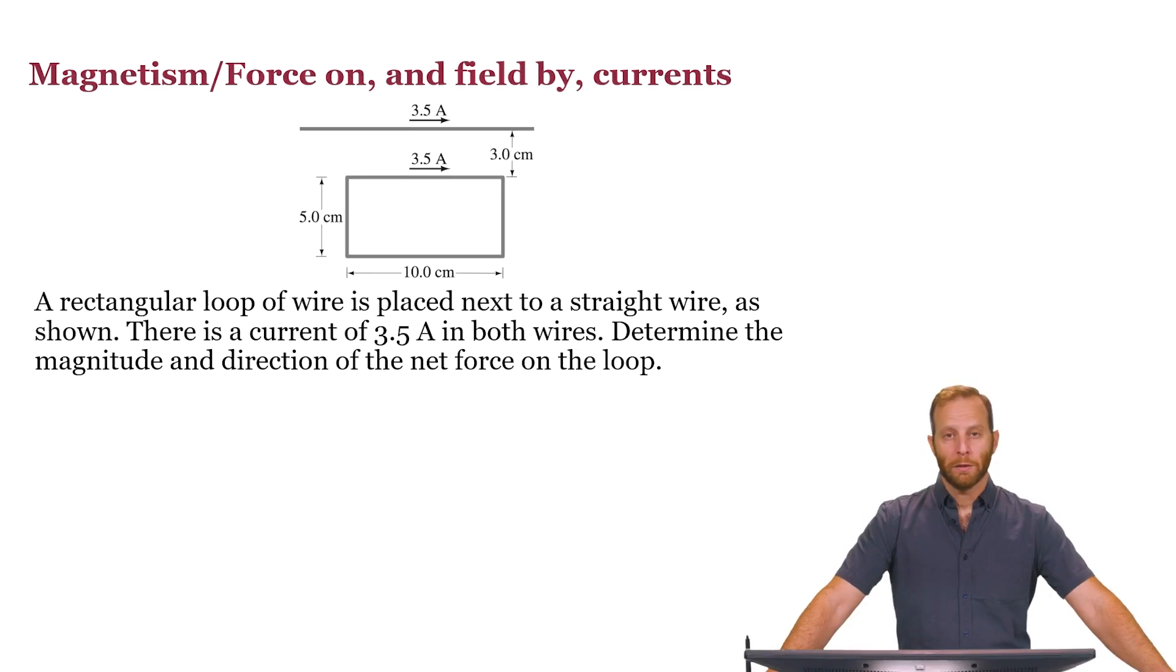A rectangular loop of wire is placed next to a straight wire as shown. There's a current of 3.5 amps in both wires. Determine the magnitude and direction of the net force on the loop.